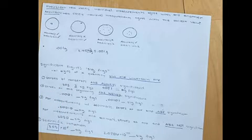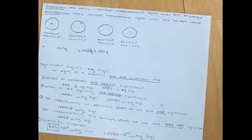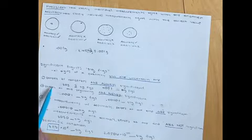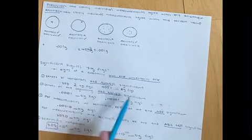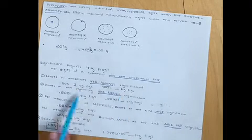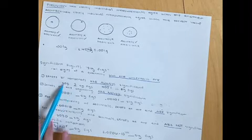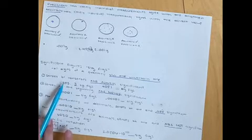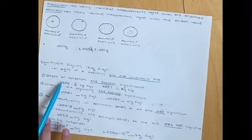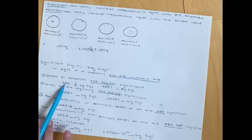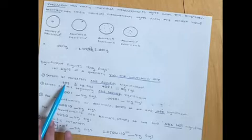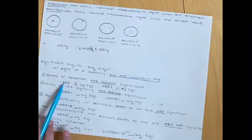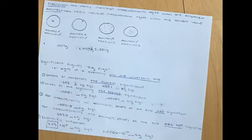One main rule for significant figures: all non-zero digits are significant. Additionally, zeros between non-zeros are always significant. For example, in 303, both threes are non-zero and significant, and the zero is between non-zeros, so it's also significant — giving us three sig figs.